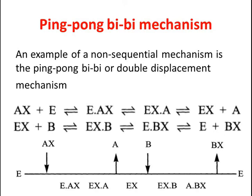Consider this reaction: AX plus E gives E-AX which gives EX-A which gives EX plus A. Now this EX plus A acts as a substrate for the second reaction and it will react with reactant B to give EX-B which gives E-BX which gives E plus BX.